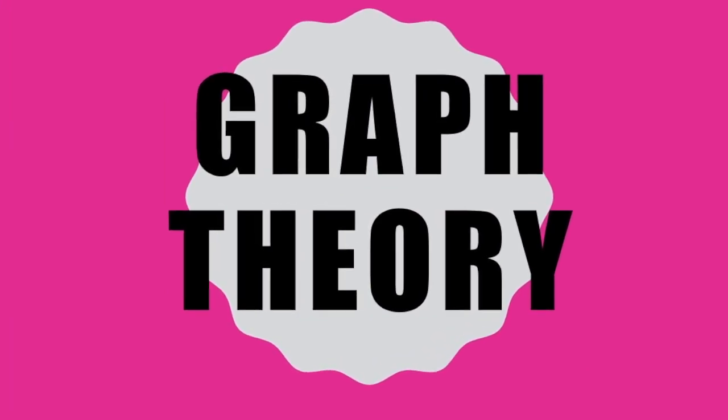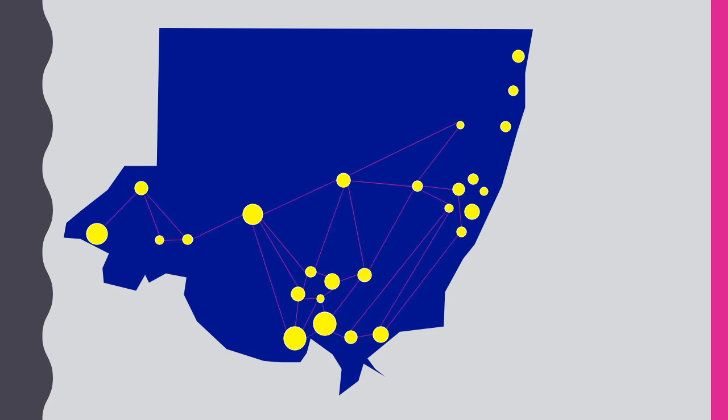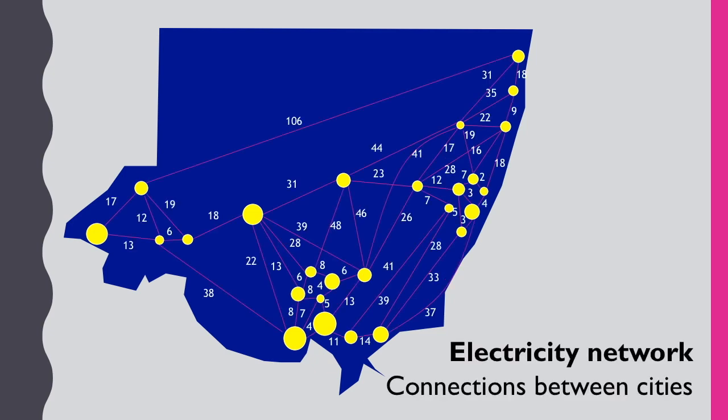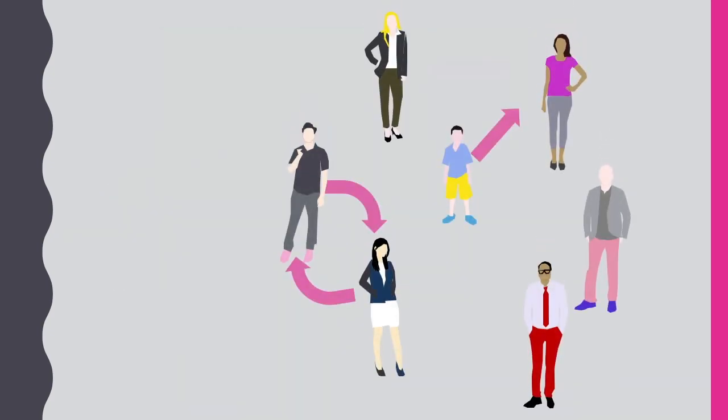In the mathematical field of graph theory, we are interested in properties and results pertaining to relationships and connections between objects.